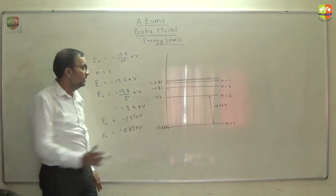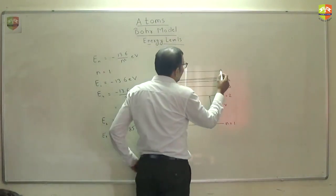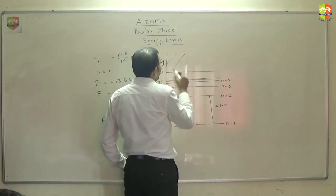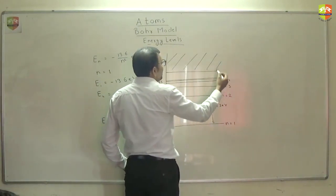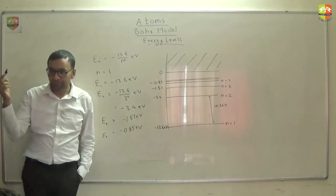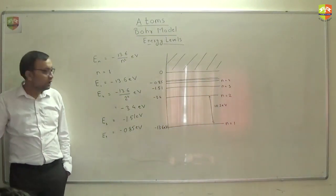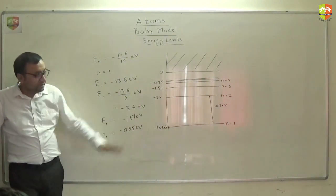So that is what? This is you can say energy level where energy is 0 and then the atom ionizes or electron leaves the atom. So this is how you can see the energy diagram is.